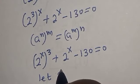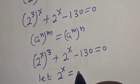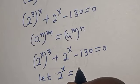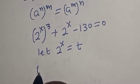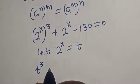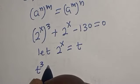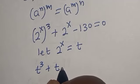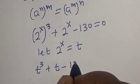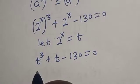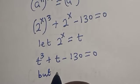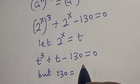Let 2 raised to the power s equal t. Then we have t raised to the power 3 plus t minus 130 is equal to 0.